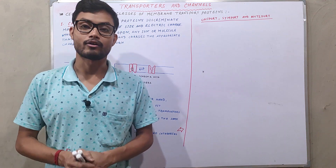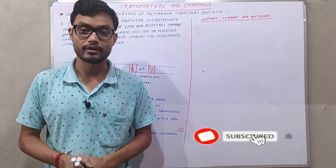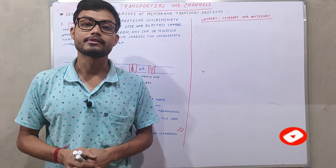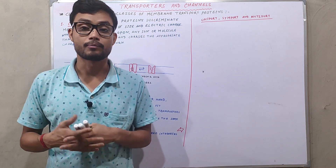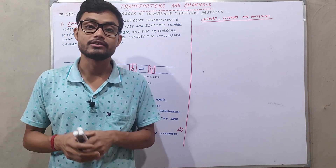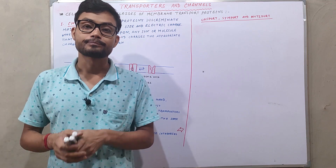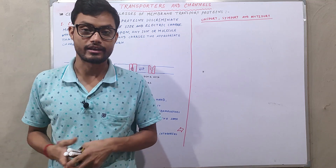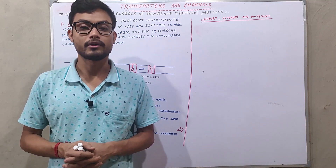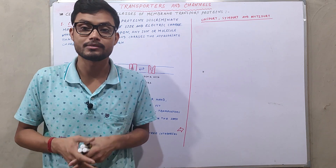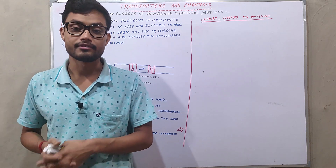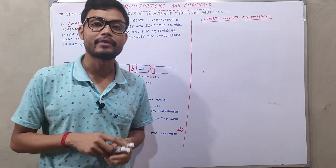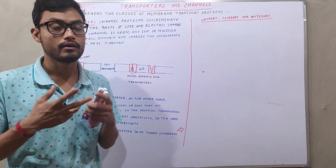Transport of solutes and macromolecules through the plasma membrane is not always completed by facilitated diffusion. Sometimes it needs proteins situated inside the membrane, and those proteins or molecules are known as transporters or channels. Hello friends, welcome to Biology Concern. I'm Animesh, and in this video I'm going to discuss the difference between a channel and a transporter.